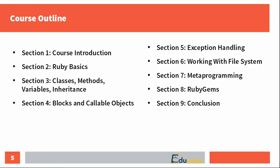In section four, we'll talk about blocks and other callable objects. Section five covers exception handling. Section six addresses the file system and various inputs and outputs. Section seven tackles probably the most powerful feature of Ruby — metaprogramming, or the ability to manipulate program structures during runtime. Section eight covers Ruby gems: what they are, how to install and use them. Section nine concludes the course with guidance on where to go next.